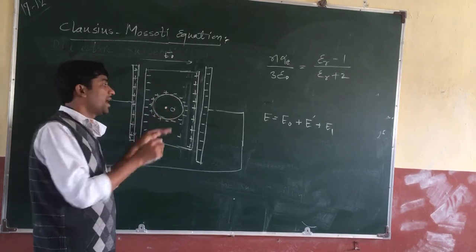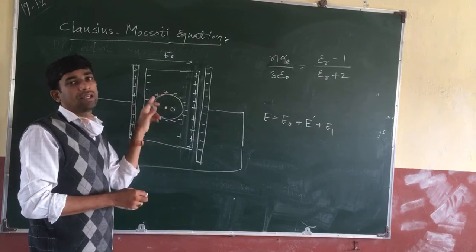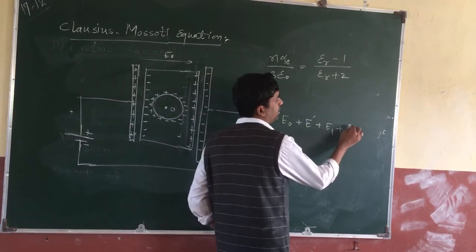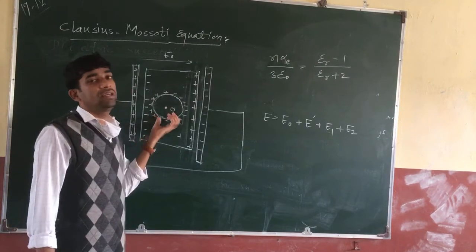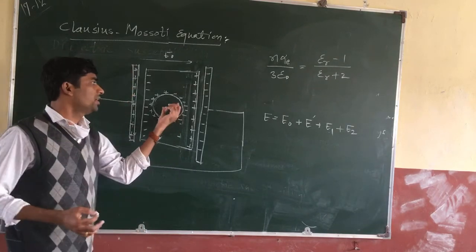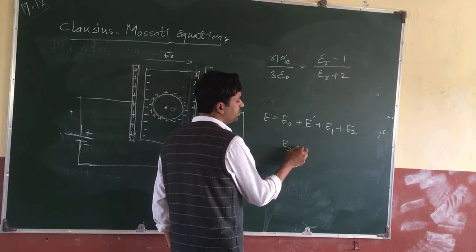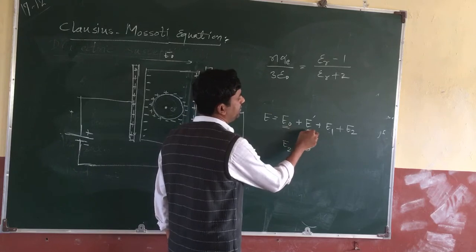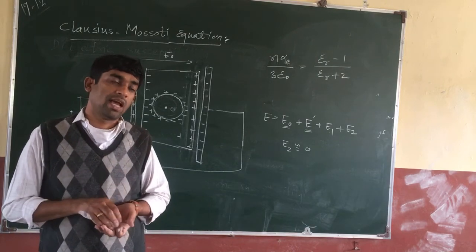To find the electric field at that point, we consider a spherical cavity of atomic dimension — on the order of 10 to the power minus 10 meters. Charges are induced on the surface of this spherical cavity, giving rise to E1. E2 is the electric field due to dipoles inside the spherical cavity. Because the cavity is of atomic dimension, there are very few dipoles inside, so E2 is nearly equal to zero and can be neglected.